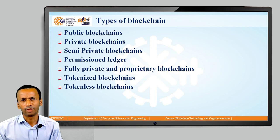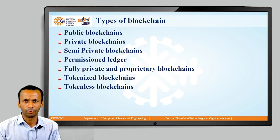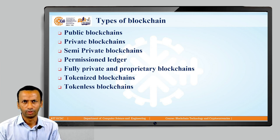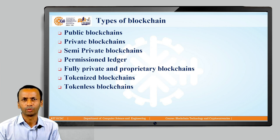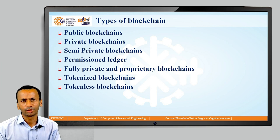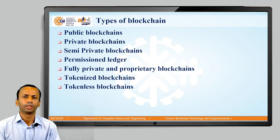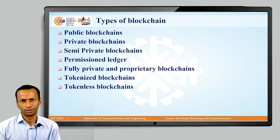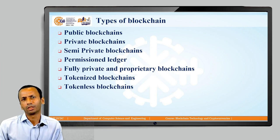Now let us see the types of blockchain. There are different types: public blockchain and private blockchain. In a public blockchain, anyone can join the blockchain network — all nodes are open. In a private blockchain, only permitted nodes can join. Depending on this, there are permissionless and permissioned blockchain categories. A semi-private or hybrid blockchain combines features of both public and private blockchains.